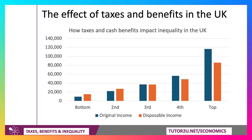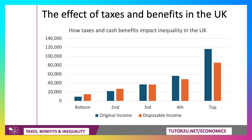Disposable income — don't forget — is original income plus benefits minus direct taxes. For the bottom and the second quintiles, their incomes go up; they're net beneficiaries from the system. The third quintile is more or less even Stevens. And for the richest 40%, the net effect of taxes and benefits is to reduce disposable income. So to that extent, the tax and benefit system reduces income inequality.